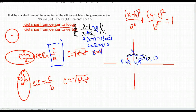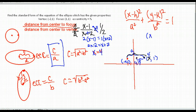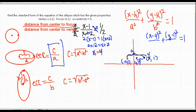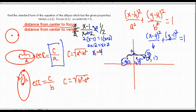So our center is at (4, 1). We can start writing our equation: (x − 4)² / something + (y − 1)² / something = 1. A is the distance from the center to the vertex — from −2 to 4 is a distance of 6, so A squared is 36.